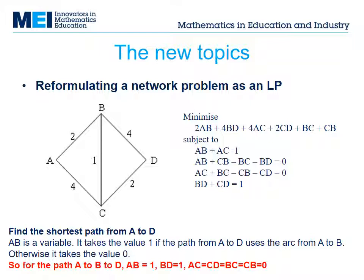Each variable — for example AB or BD — is constrained to take the values 1 or 0. AB takes the value 1 if the arc from A to B is used in the path. If the arc from A to B is not used, then the variable AB is 0.